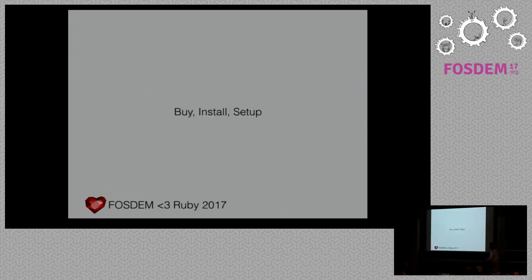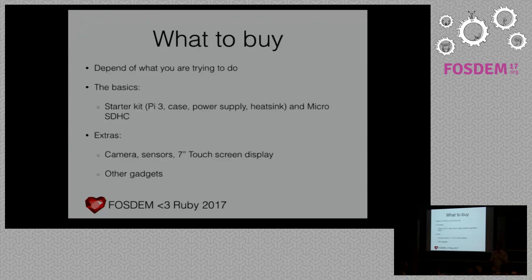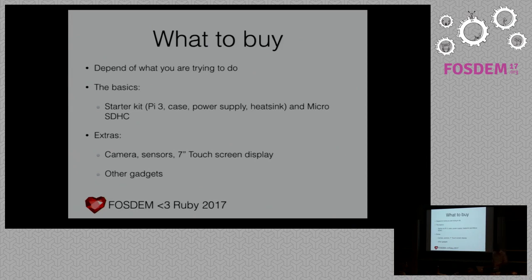So, buy, install, and set up. Where to buy? Element 14, Amazon, or any micro centers near you. I bought all of mine from Amazon. What should you buy? It depends on what you're going to do. If you want to put your Pi in a balloon, go for the Pi 1. If you're doing this in your basement or house, go with the Pi 3, which is the latest and has Wi-Fi. Starter kits come with a Pi 3, a case, power supply, a heatsink — and you'll need to buy SD cards separately.